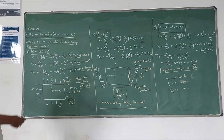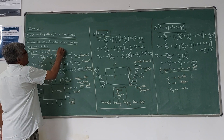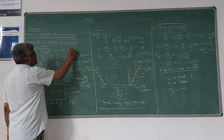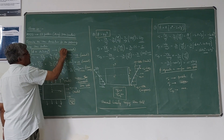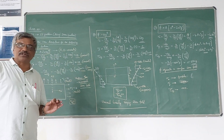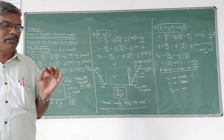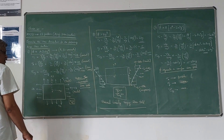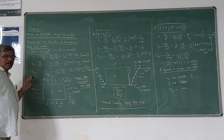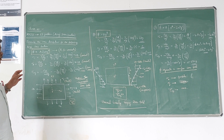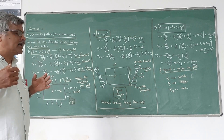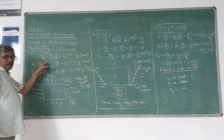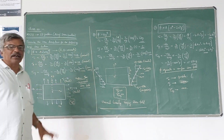We have constants here. We know how to find stress components from the Airy stress function. The stress components in a two-dimensional system are three: σx, σy, and τxy, where σx and σy are normal stress components and τxy is the shear stress component. By knowing the stress function φ, you can find σx as ∂²φ/∂y².